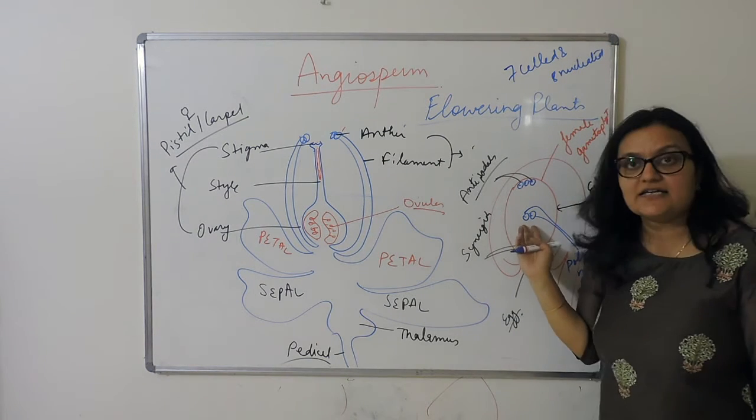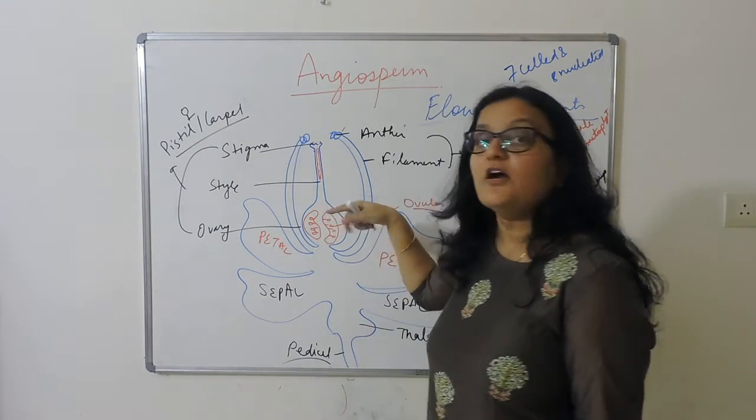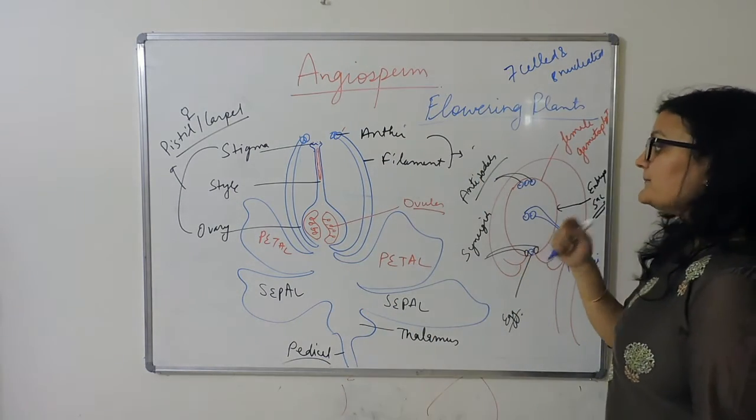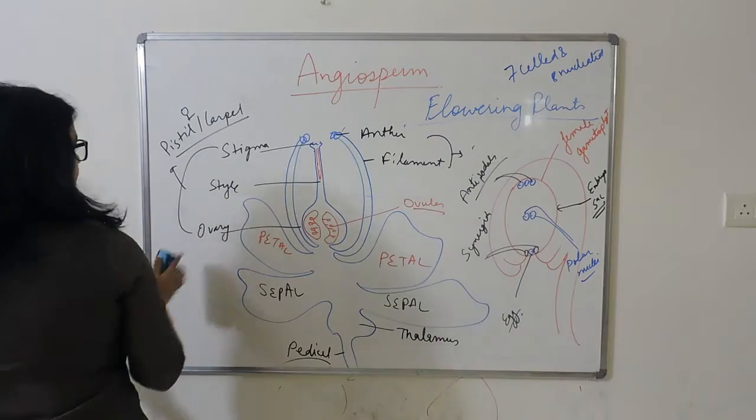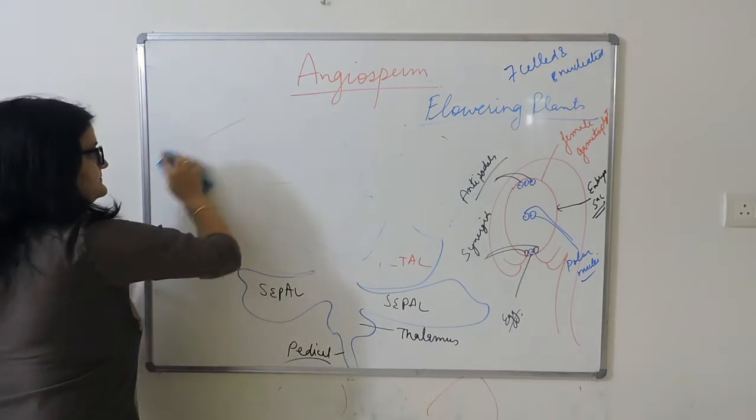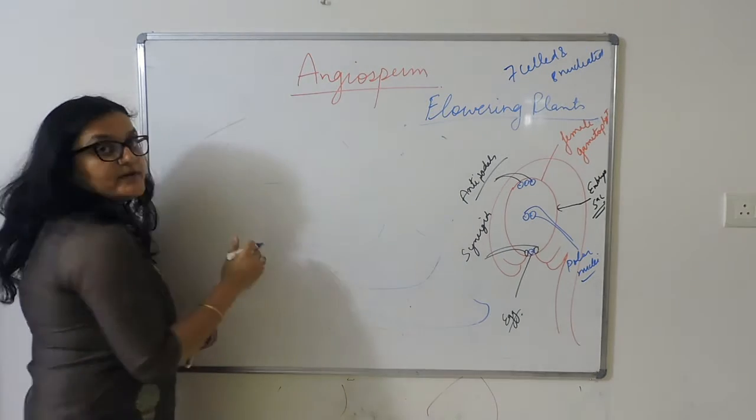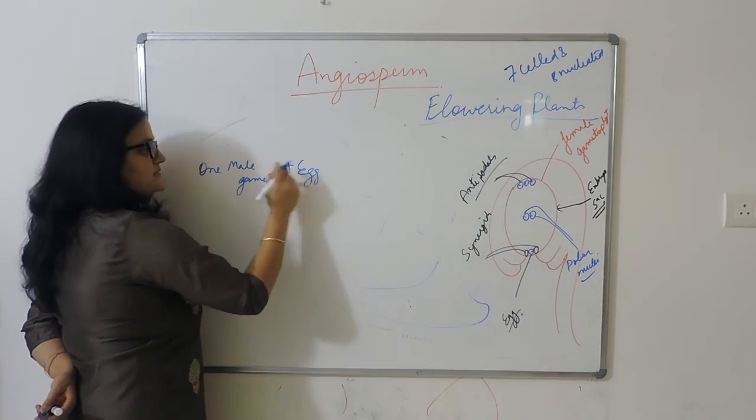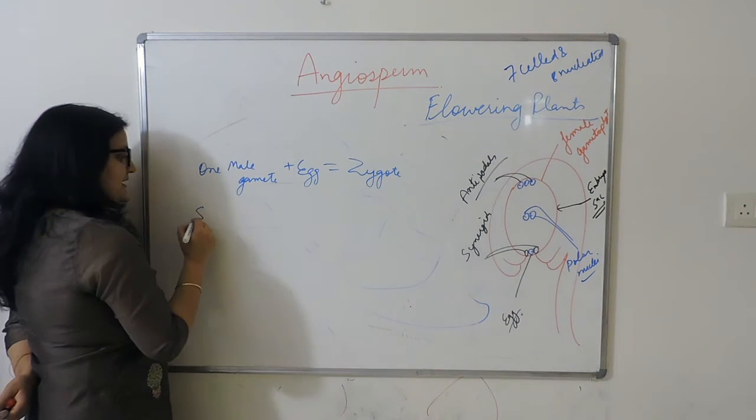The nucleus is in 2N condition, but the cell is one. The polar nuclei germinate and pollen grain forms the male gametes through the ovules into the embryo sac. Two male gametes are formed. One male gamete fuses with egg and forms the zygote. One male gamete is going to fuse with egg and form the zygote.